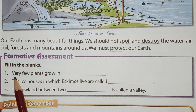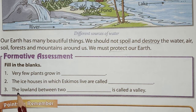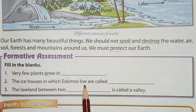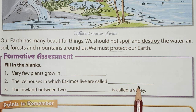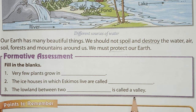Let's solve this. Very few plants grow in polar regions. The ice houses in which Eskimos live are called igloos. The low land between two mountains or hills is called a valley.